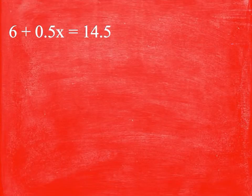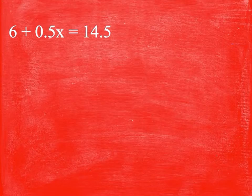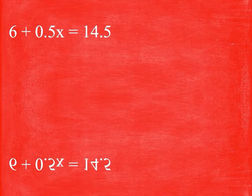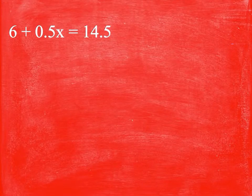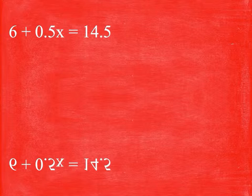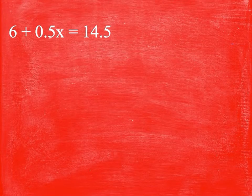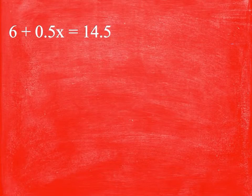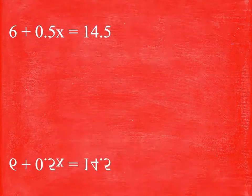That gives me 0.5x on this side. These cancel each other out and that makes it equal to 8.5 on that side. Now we're going to divide by 0.5, divide by 0.5, and x will be equal to 8.5 divided by 0.5.